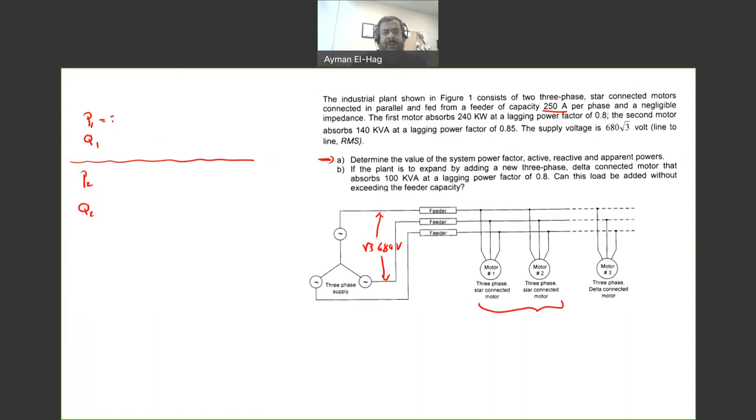So now for load number 1, P1 is already given to us as 240 kilowatt. Now we know the power factor is given to us as 0.8. So theta 1 is equal to cosine inverse of 0.8, which is equal to 36.87.